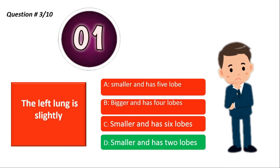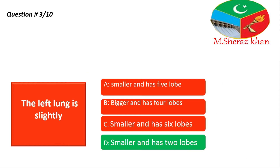So the right answer is option D — it's smaller and has two lobes. When we do comparison with the right lung, comparatively aapke paas jo left lung hai wo smaller hai, and that consists of two lobes.